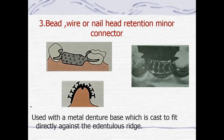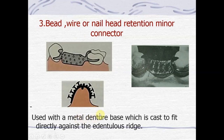The third subtype is the bead, wire, or nail head retention minor connector, named because of its appearance — it has either beads or a nail head appearance on the minor connector. It is used with a metal denture base cast to fit directly against the edentulous ridge. These projections may be created by placing resin beads on the appropriate segments of the wax pattern and inverting it before casting. The primary advantage of a metal base is improved hygiene; it is the most hygienic type of minor connector and has enhanced thermal stimulation.